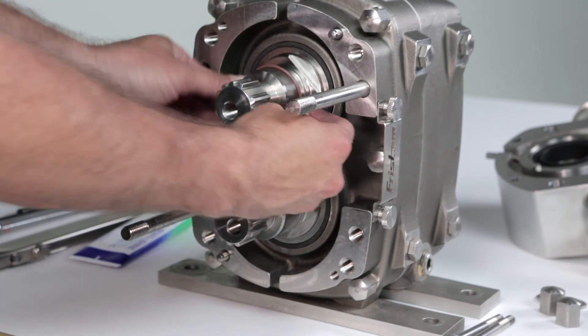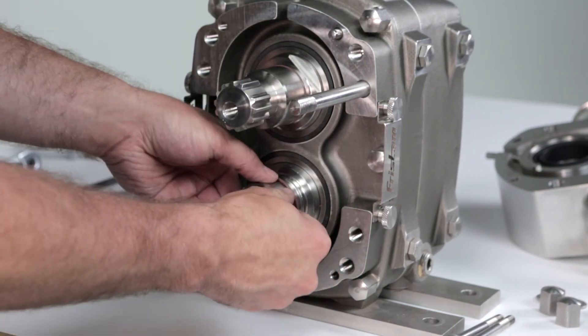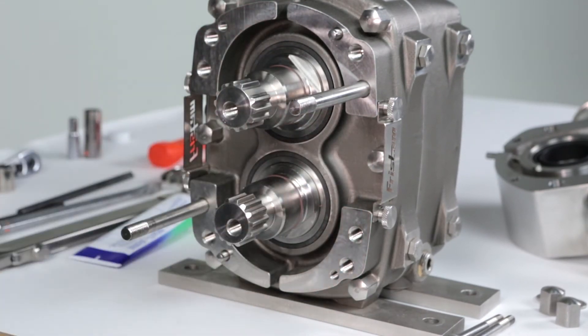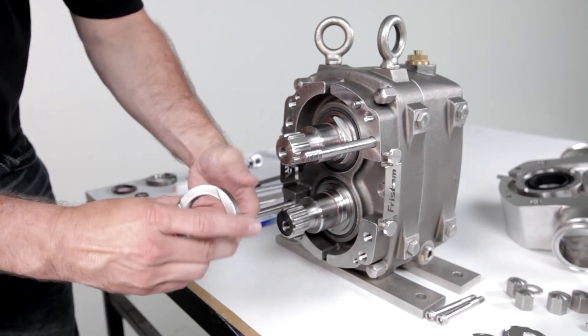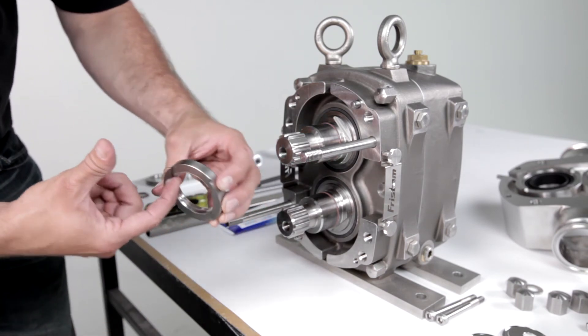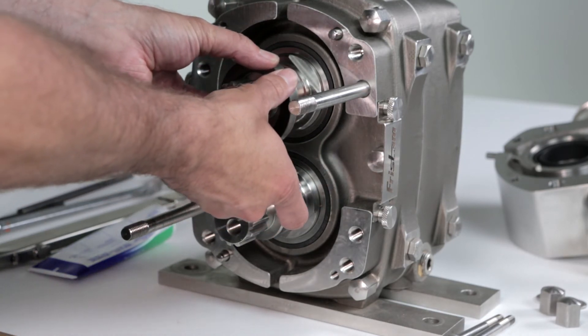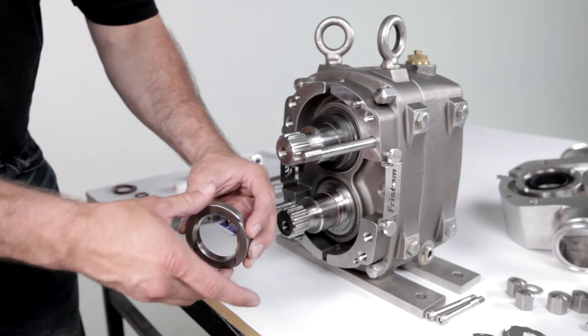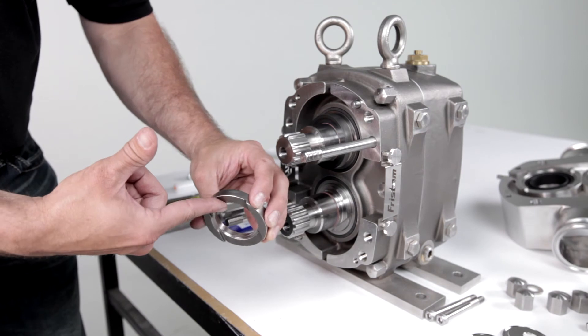Install a new rotating seal o-ring into the groove on each shaft. Lubricate the inner diameter of the rotating seals and install them onto the shafts. Make sure to align the flats on the seals with the flats on the shafts.